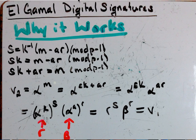Well first, as a review, recall that when we sent our message, we sent the message m and then we sent our variables r and s.